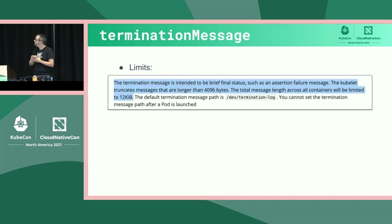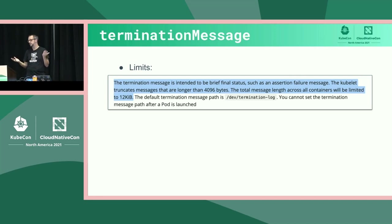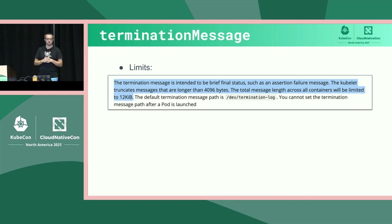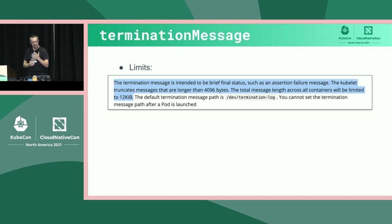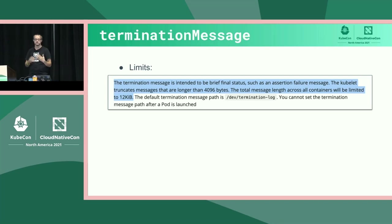There are some limits we've started to hit: the kubelet will only collect 4K of data per container and only 12K across all containers in the pod. This is mostly enough for git commit SHAs, container image digests, and timestamps. But it will start to break down for anything more complex than that, and it's only a matter of time before people ask for that. To poorly paraphrase Steve Jobs, '4K should be enough for anybody' is not actually true, as it turns out.